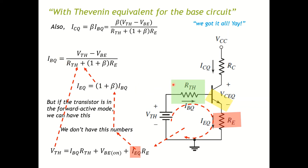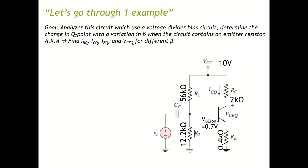Now let's go through one example together. If I give you a circuit here, the goal is to analyze this circuit which uses a voltage divider bias circuit, trying to determine the Q-point with a variation of β when the circuit contains an emitter resistor.